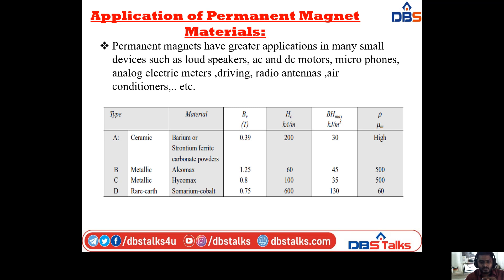For type D, the rare earth material consists of chromium cobalt. The Br value is 0.39 for tight-gauge ceramic, Hc guidelines for the tight-gauge ceramic is 200, and the BH maximum value for tight-gauge ceramic is 30. The relative permeability is high. For type B metallic — Alcomax — the values of Br, Hc, and BH maximum are 1.25, 60, and 45, with relative permeability 500.